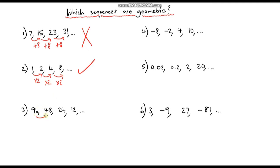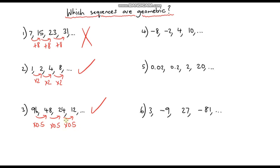This next one is getting smaller but we're still multiplying by some number. We're halving — going from 96 to 48 — so you could think of it as dividing by 2 or multiplying by 0.5. From 48 to 24 I'm multiplying by 0.5, and from 24 to 12 I'm multiplying by 0.5. So yes, this is also a geometric sequence and the common ratio is 0.5.